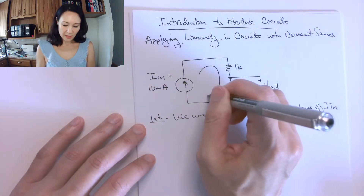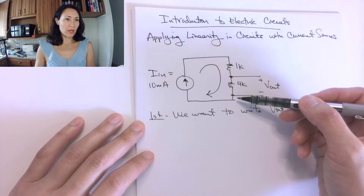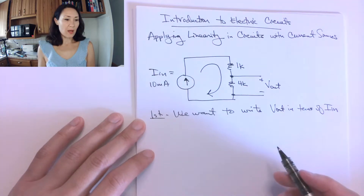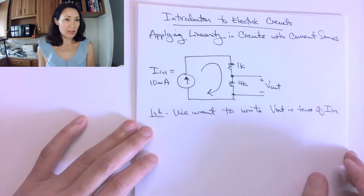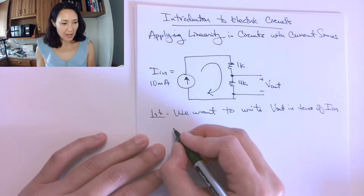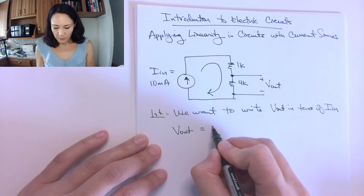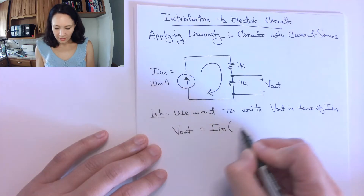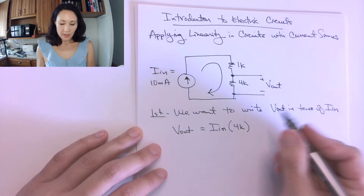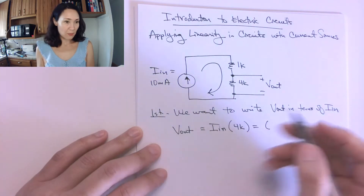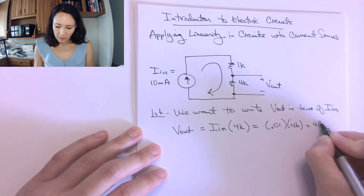This is a series circuit, which means the current is the same everywhere. The current going through the 1k ohm resistor and the 4k ohm resistor is all going to be Iin. So this ends up being quite a bit easier than for the voltage source. The voltage drop at the output resistor is, using Ohm's Law, Iin times 4k ohms. Our Iin is 10 milliamps, so that's 0.01 amps times 4,000, giving us 40 volts.